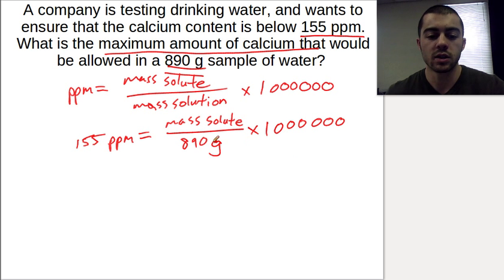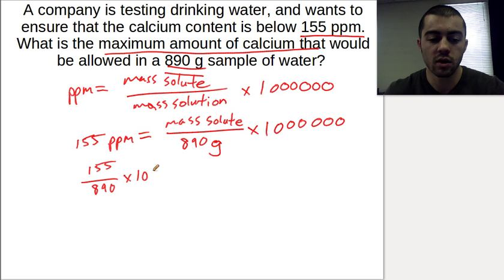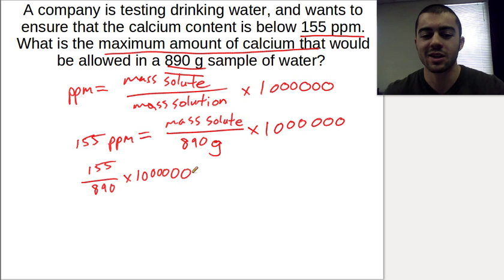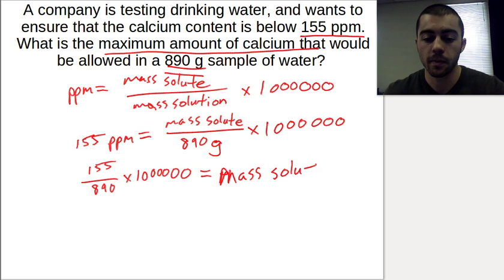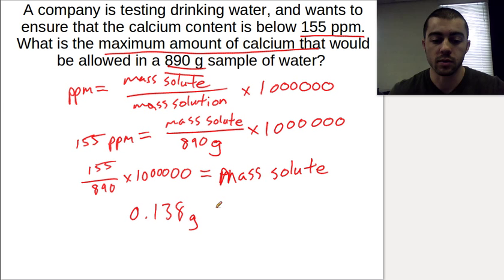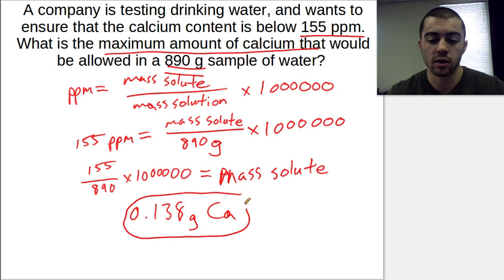To solve this, we just want to get the mass of the solute by itself. We can multiply both sides by 890 and then divide by a million. This would be 155 times 890 divided by a million, which gives us the mass of the solute. If you just do that out, you get the mass of the solute to be 0.138 grams of calcium that we can mix into this solution.